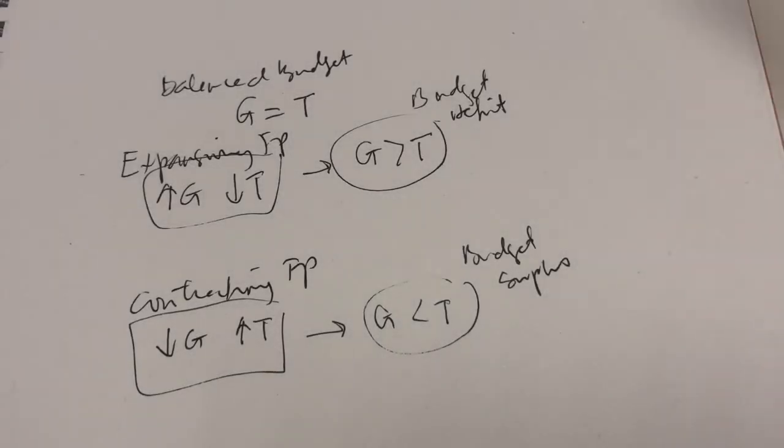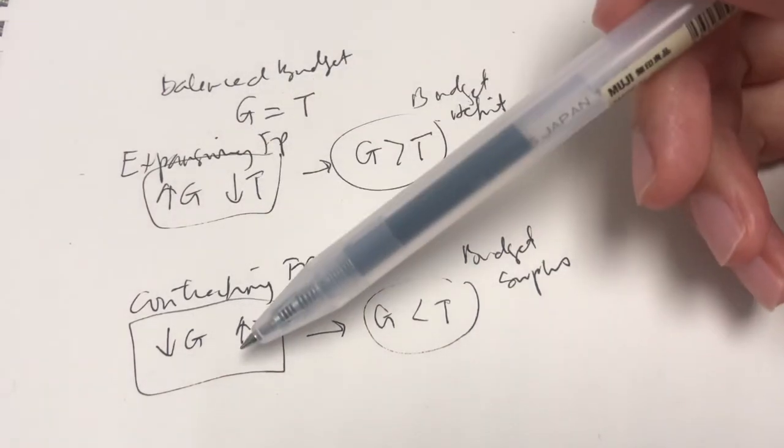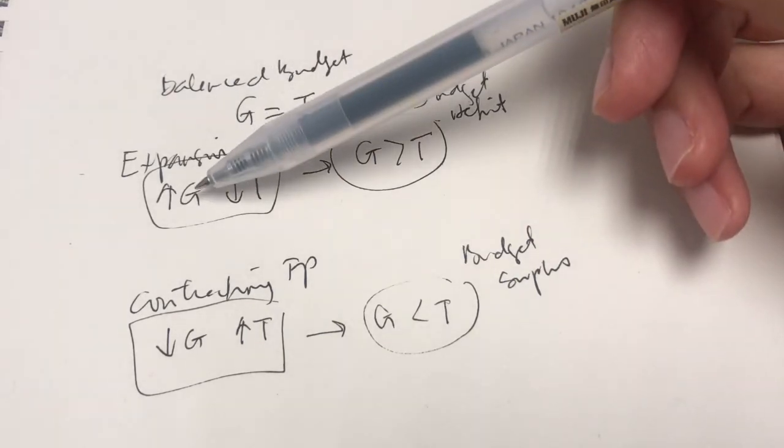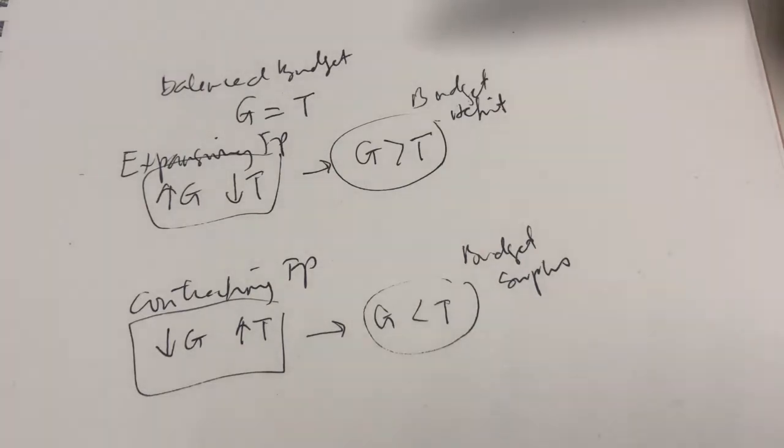As you can see here, the government has both of these tools to use when there's a problem of either a recession or an inflation. So, the government can either use the G, government spending, or the T, taxation. So, the question is, which of the policy options should the government adopt? Should the government adopt a G or a T approach?